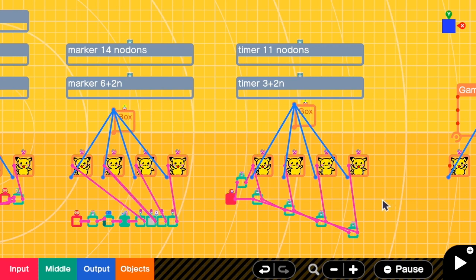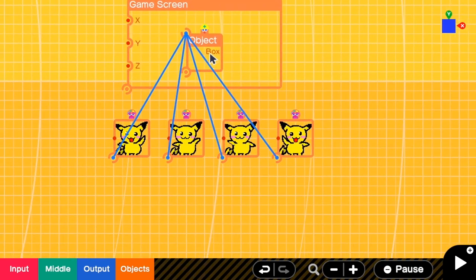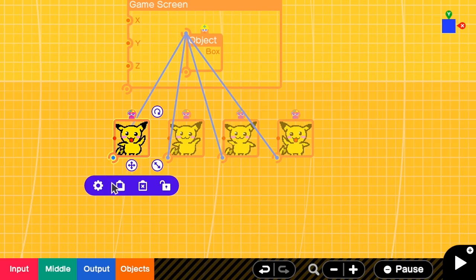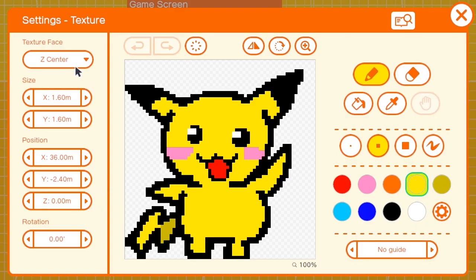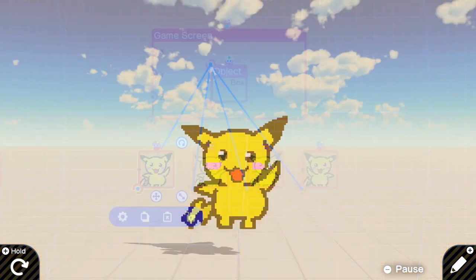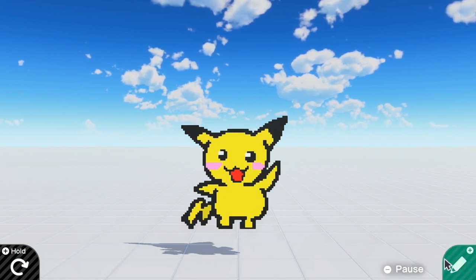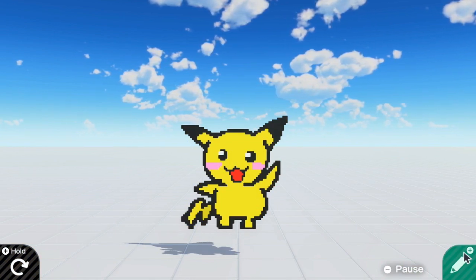Okay, so let's see how we are going to animate by using the timer. So here I have one box with four textures and each of the texture has the texture face Z center. So now if I go to the game screen, I can see the floating Pikachu here, which is what I want. But I want to animate it.